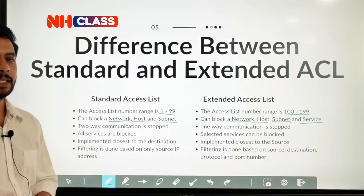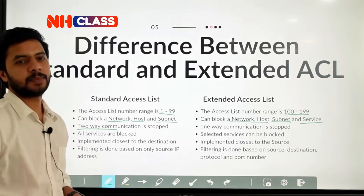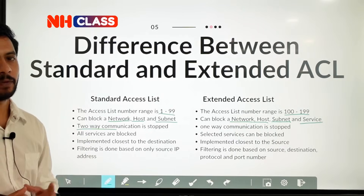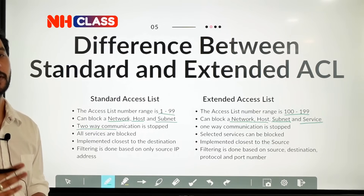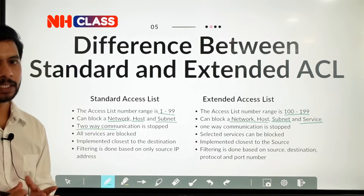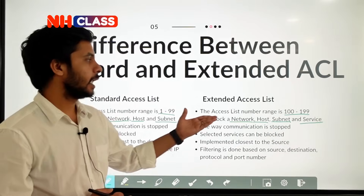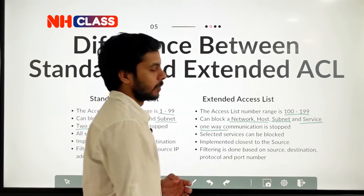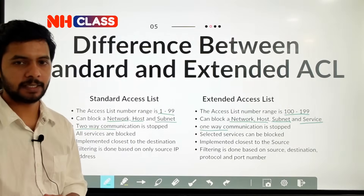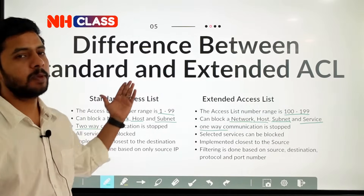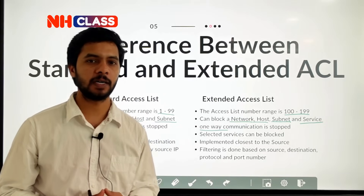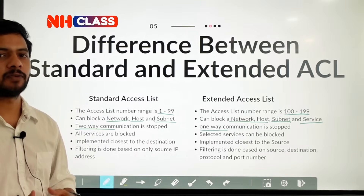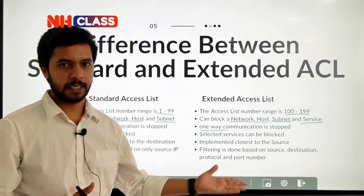With a standard access list, two-way communication is blocked — if two devices are not supposed to communicate and you implement a standard ACL, the two-way communication will be stopped. But with an extended access list, only one-way communication will be blocked. How this two-way and one-way blocking works will be shown in the next video with a practical demonstration of how standard and extended access lists work.